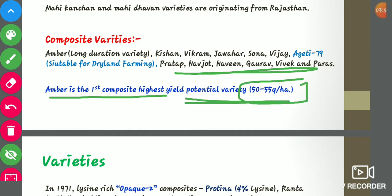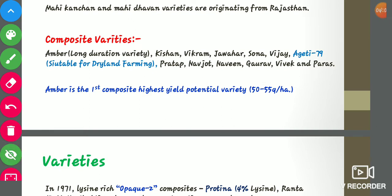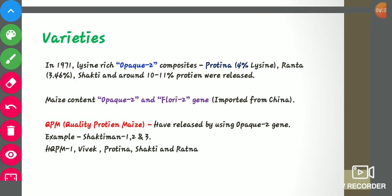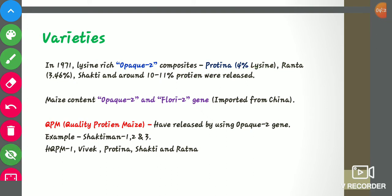In 1971, lysine-rich opaque-2 composites were released. These were Proteina, having 4% lysine; Ratna, having 3.46% lysine; and Shakti — all of these having 10 to 11% protein. Maize also contains the opaque-2 and floury gene, which were imported from China.